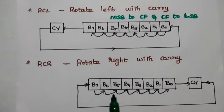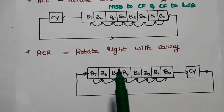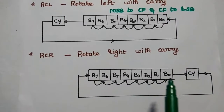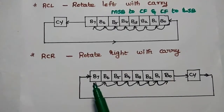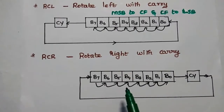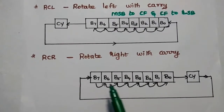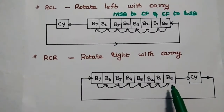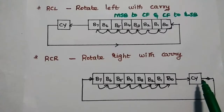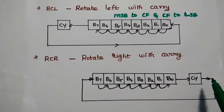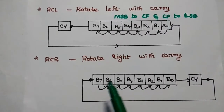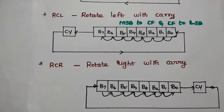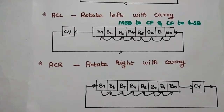Next is RCR — Rotate Right with Carry. Here we rotate bits towards the right side: B7 to B6, B5, B4, B3, B2, B1, and B0. B0 is given to the carry flag, and the carry flag is given to the MSB. These are all the rotation-related instructions used in the 8086.